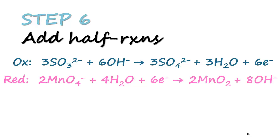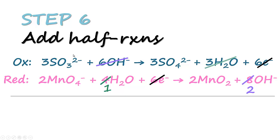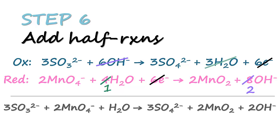For the final step we add both half reactions. After multiplying from step five, we simplify terms before adding. The six electrons on each side cancel out. For water, we have three H₂O on one side and four H₂O on the other, which simplifies to one H₂O on the left hand side. For OH⁻, we have six on one side and eight on the other, simplifying to two OH⁻ on the right hand side. We then add up the remaining terms and this gives us our final answer.